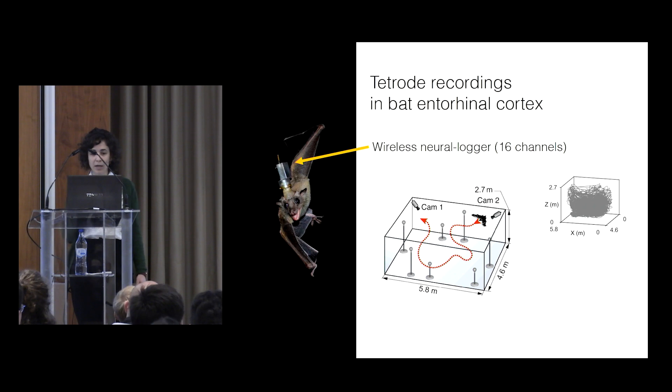and the bats just fly around in this 5 by 6 meter room. You can see here in gray the trajectory of a bat in the room. They cover the room pretty extensively, and on average, a bat would fly an average of 2 kilometers per session.